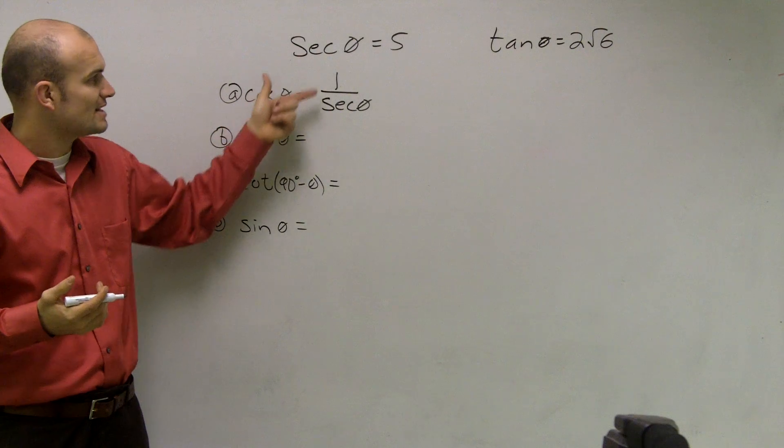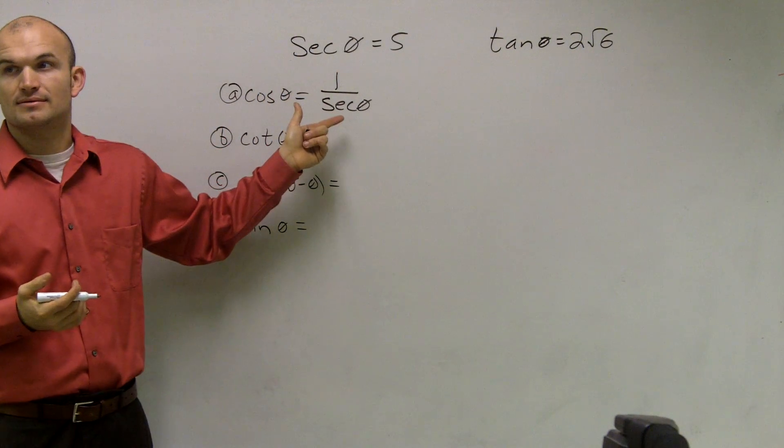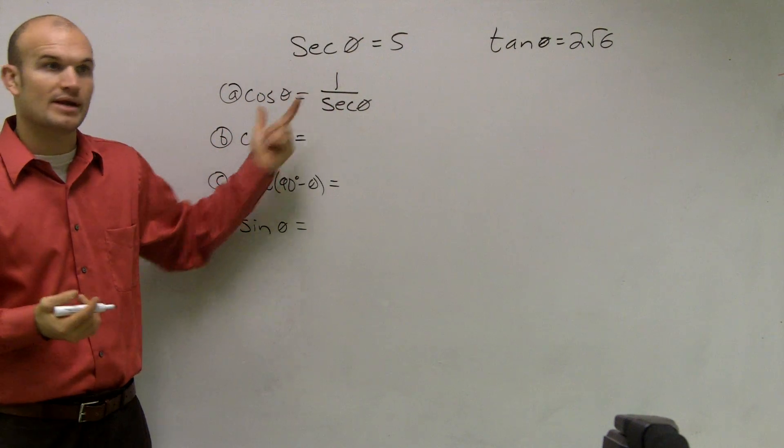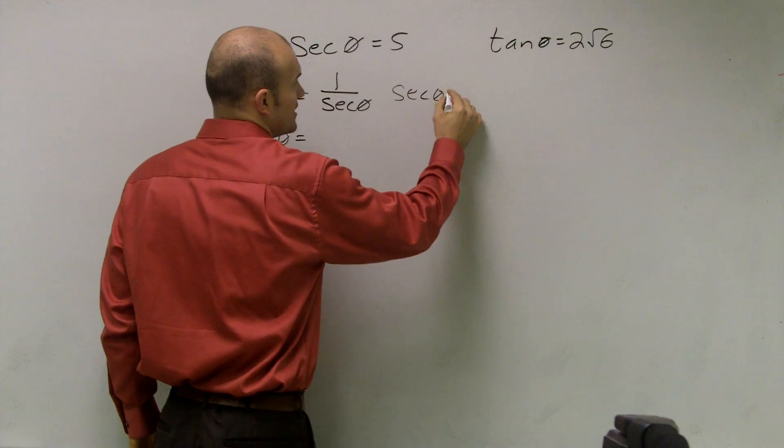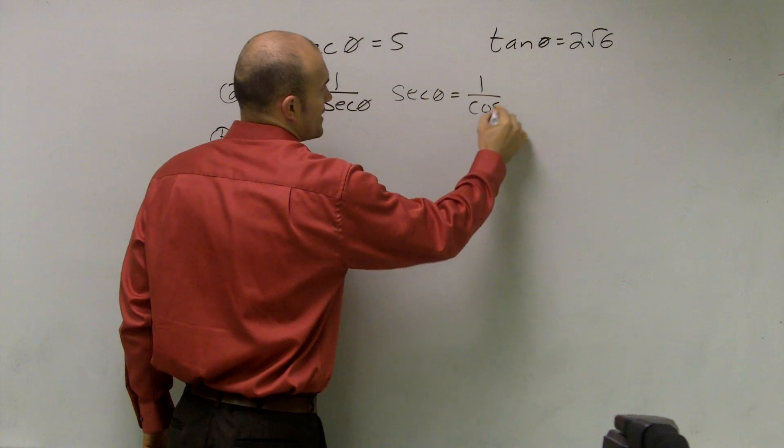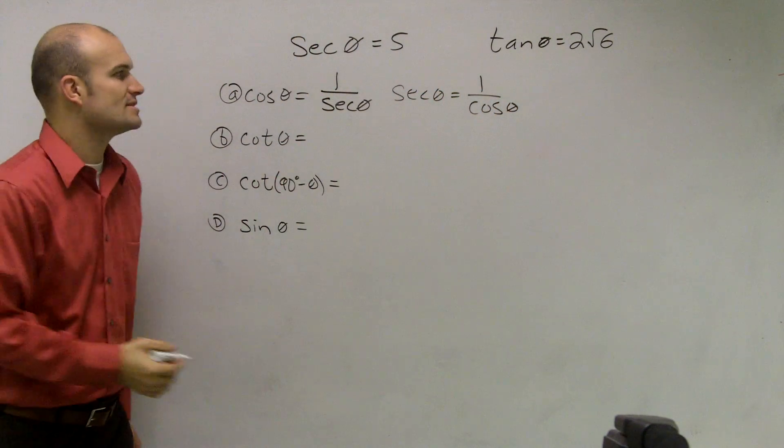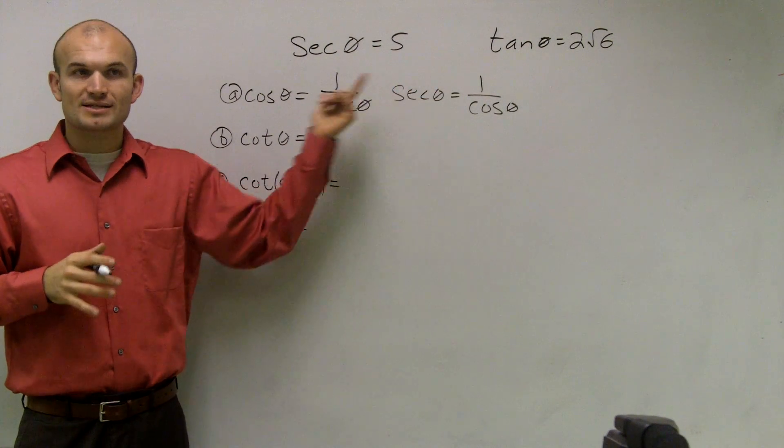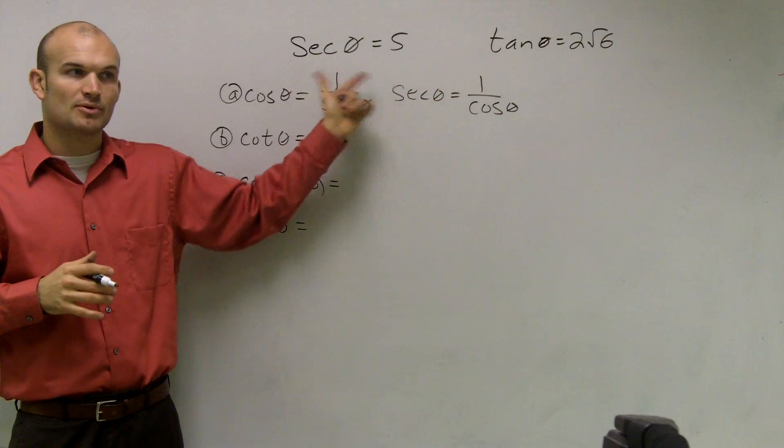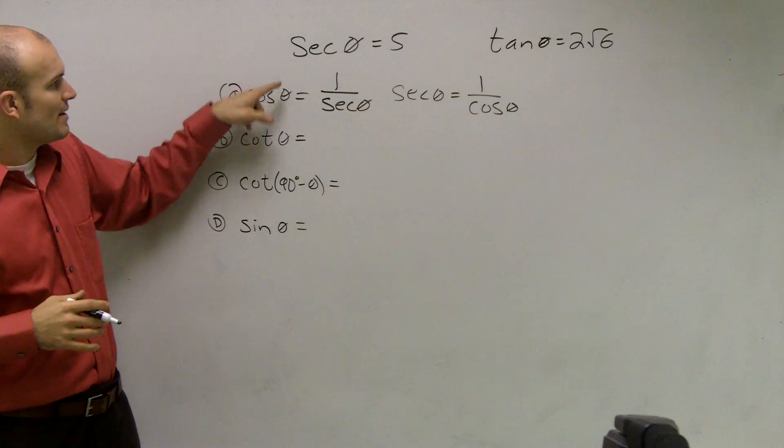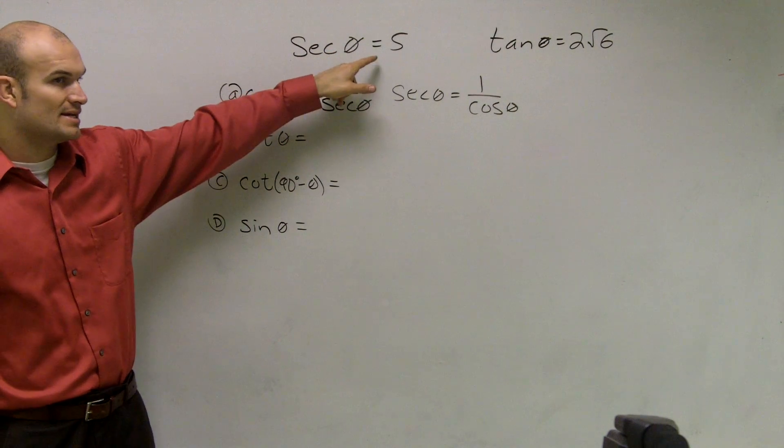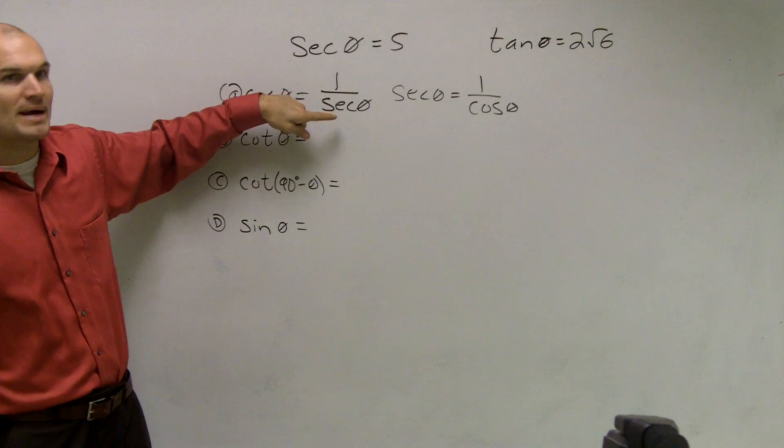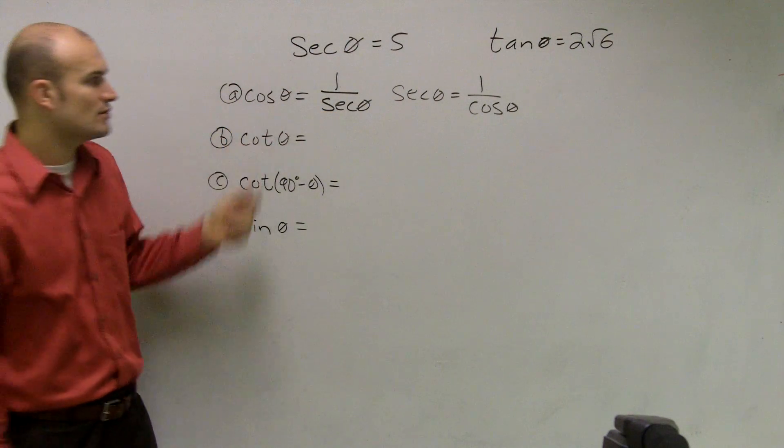Therefore, I know that cosine is the same thing as 1 over secant, and secant of theta equals 1 over cosine of theta. You guys need to understand those two relationships in those two boxes. These are the reciprocals of each other. So therefore, if I want to find what cosine is and I know what secant is, all I need to do is put 1 over my secant to find the value of cosine.